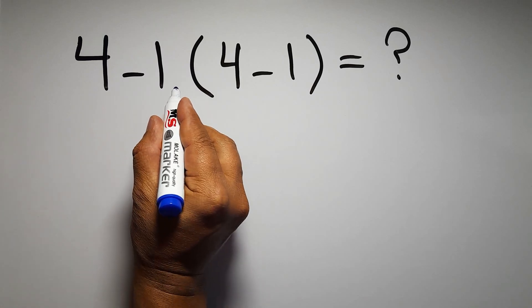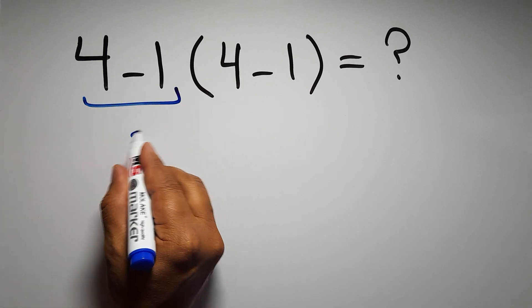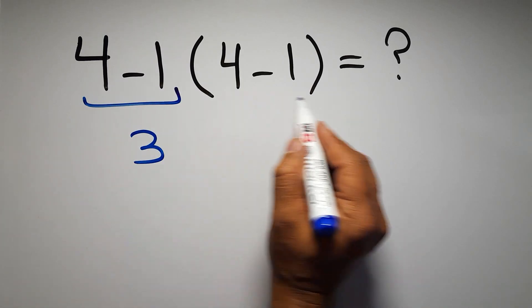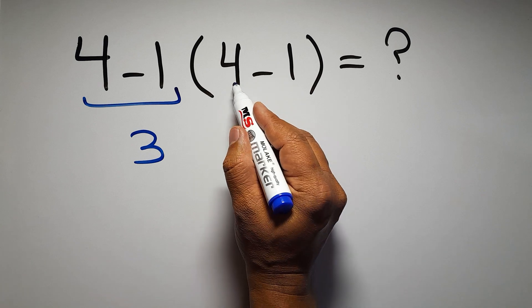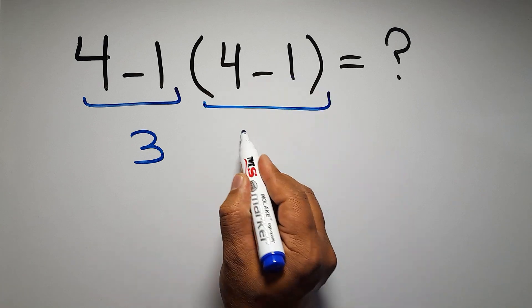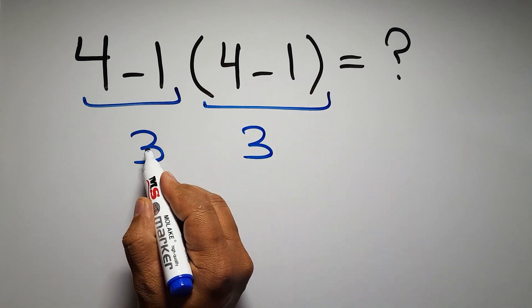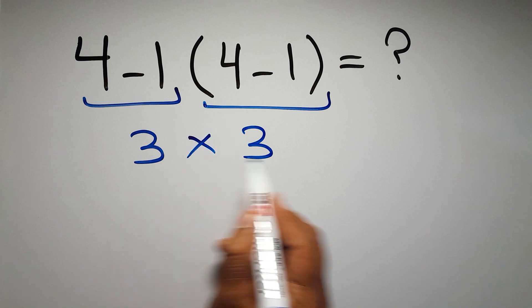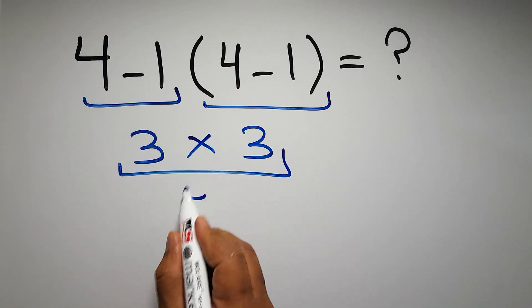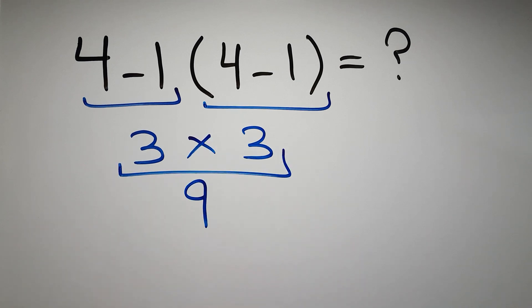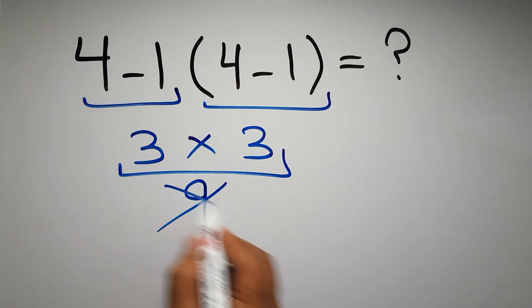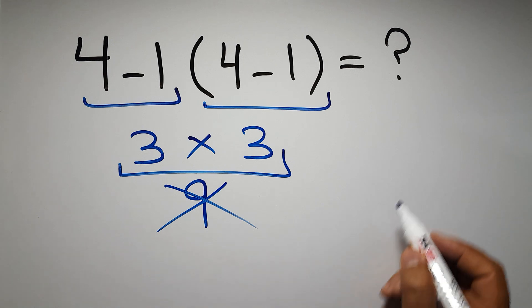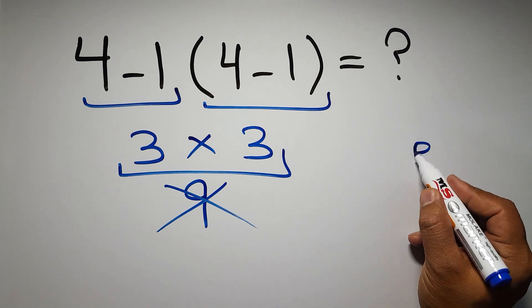Four minus one equals three, and again here inside these parentheses we have four minus one, so three times three which equals nine. But this answer is not correct because according to the order of operations, first we have to follow the proper rules.